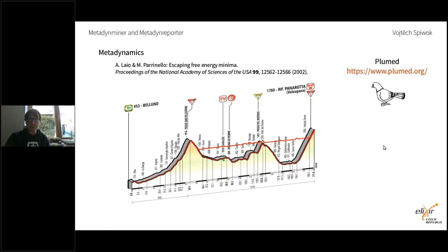From the amount of bias potential we can predict the free energy of a corresponding state — so we can predict how stable a state corresponding to a certain minimum is — and we can predict some thermodynamics and kinetics of the system. The program mostly used for metadynamic simulation is PLUMED, a very nice plugin which can be plugged into different simulation codes. Our tools that I will show in the next few slides can use the output files coming from this PLUMED package.